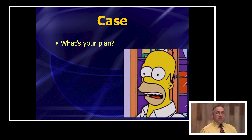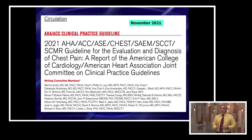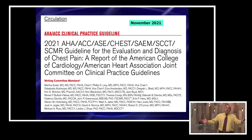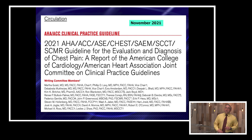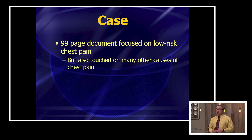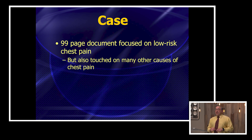Let's say you're not worried about PE, you're not worried about dissection. You have some concerns about acute coronary syndrome. Well, just a few months ago in November 2021, the AHA, the ACC, the ASC, and a lot of big societies came out and published this guideline that we all have to know about, and it focuses on these relatively low-risk patients. It's a 99-page novel of a document focused on low-risk chest pain.